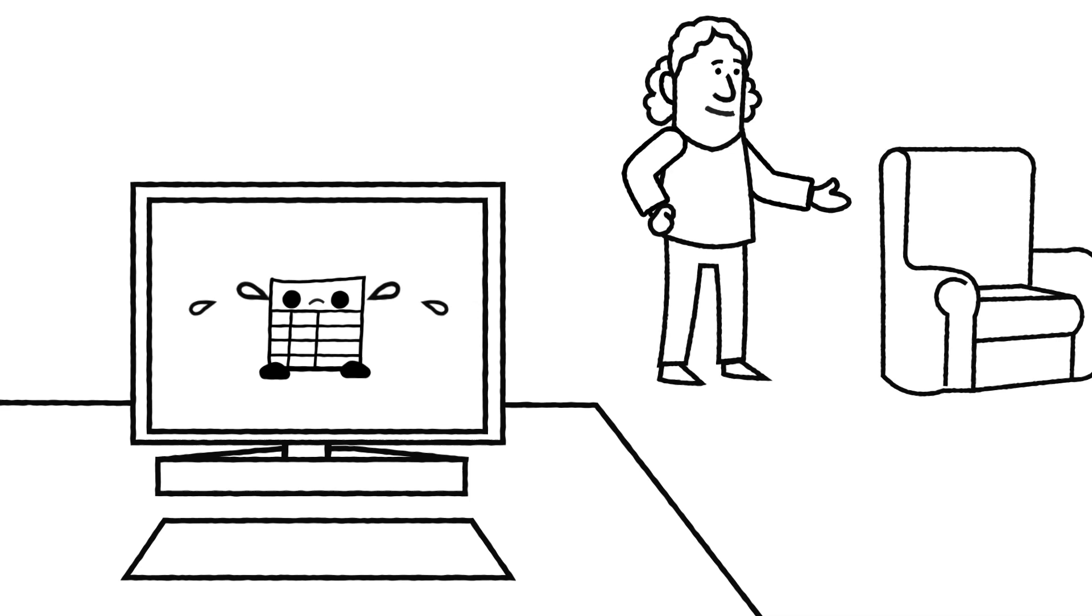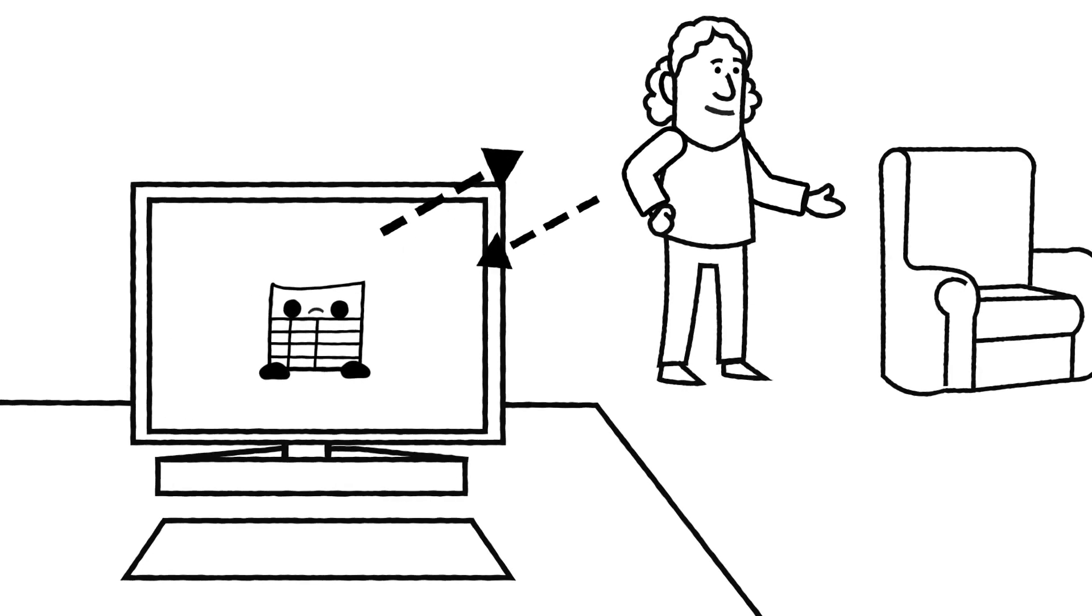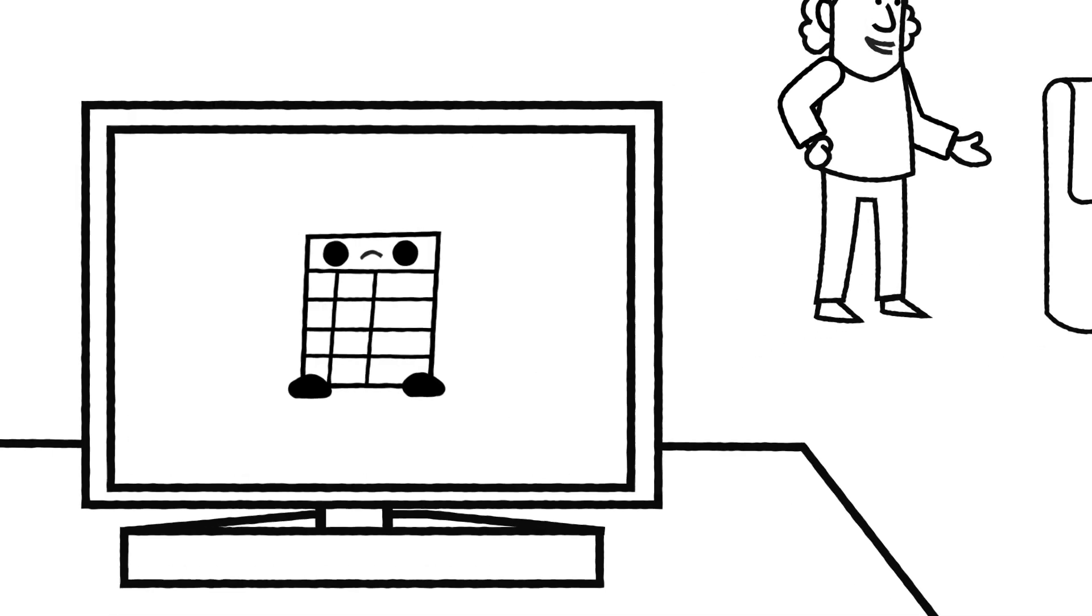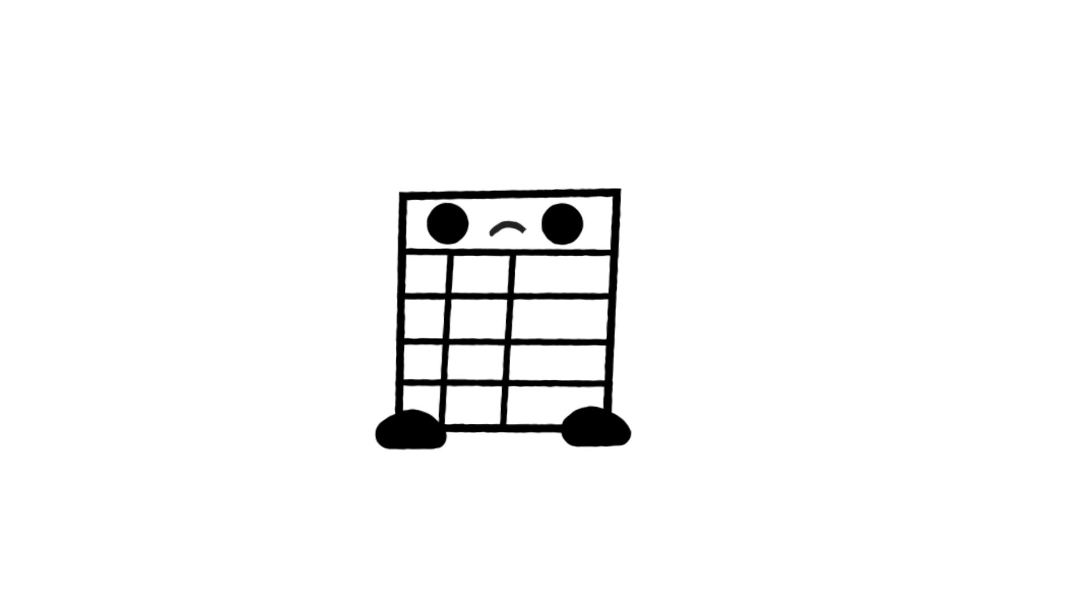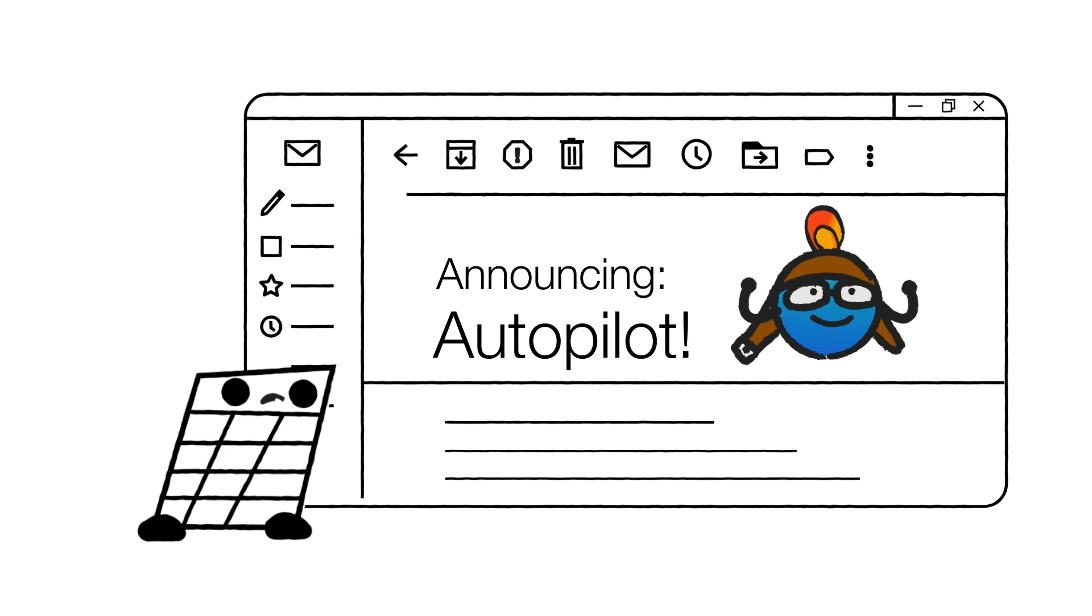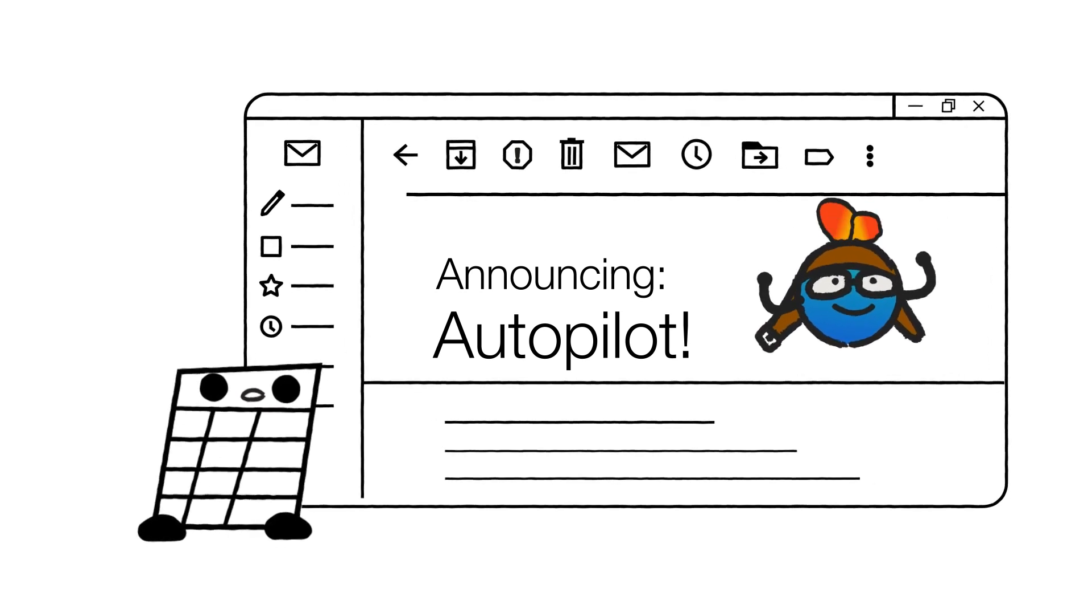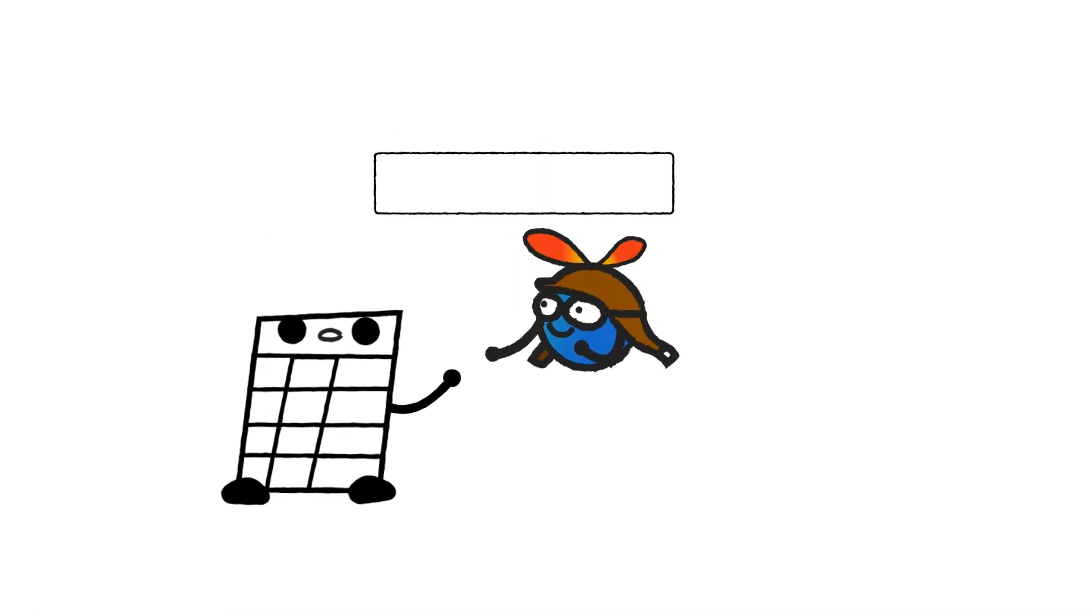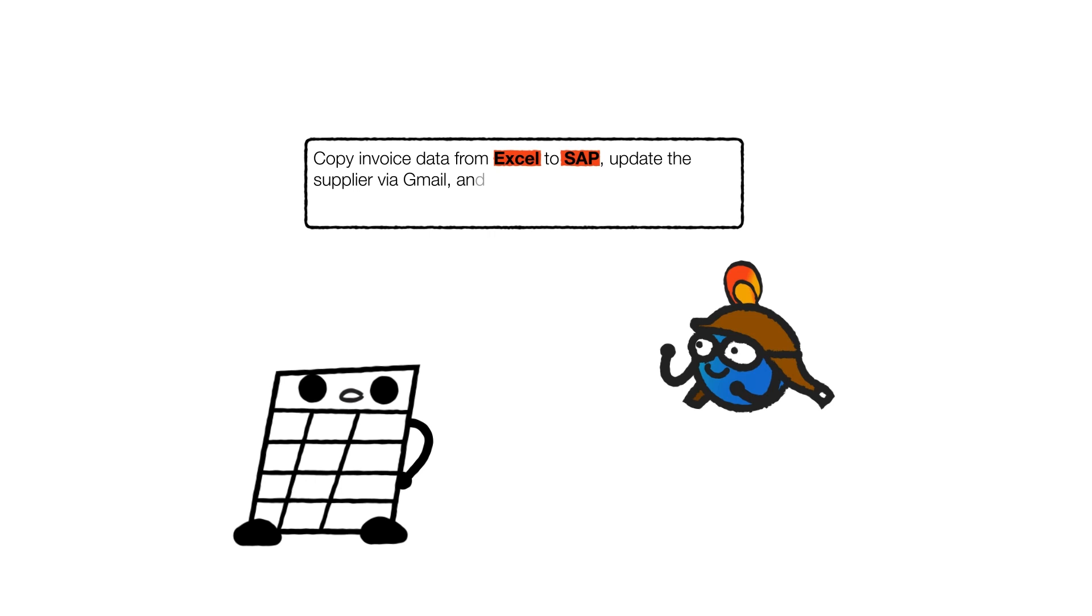If only there was a way for humans and computers to communicate better. Hey Shirley, I know you and AI got off to a bad start, but have you seen this email? Something about there being a new partner for AI at work called UiPath Autopilot. It uses natural language to help everyone work smarter and faster.